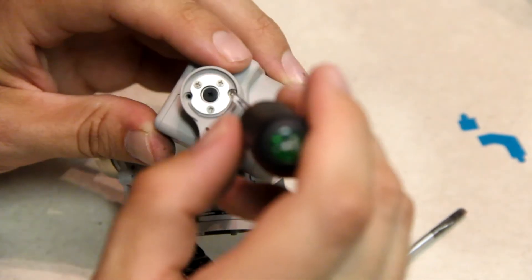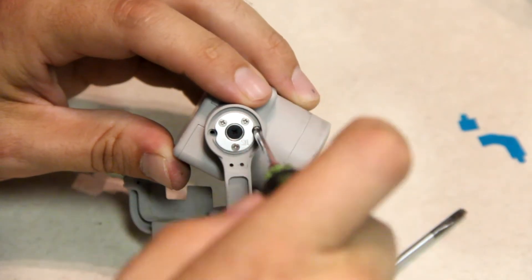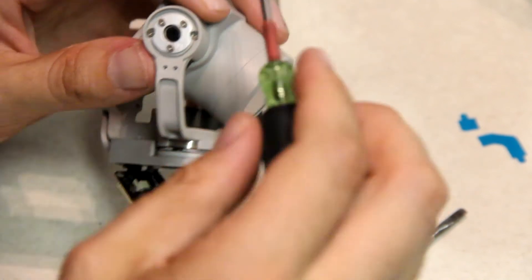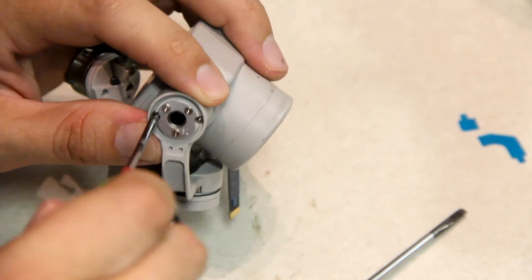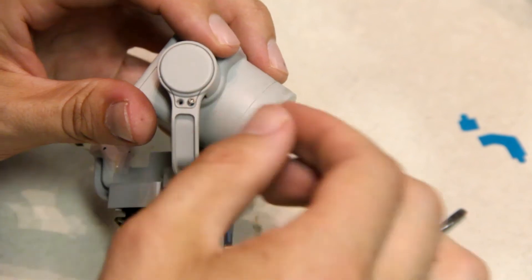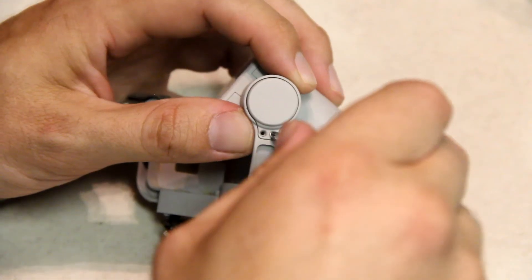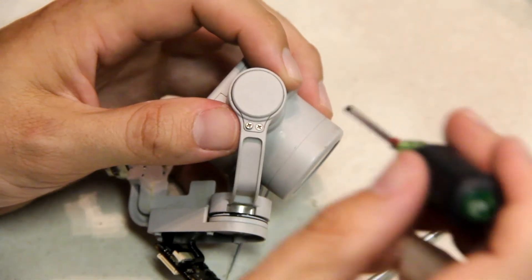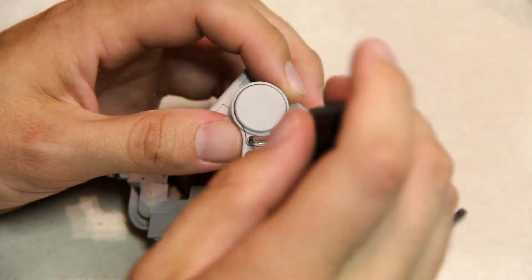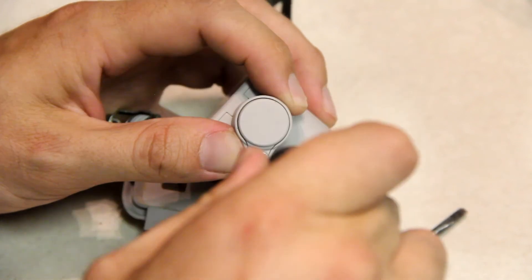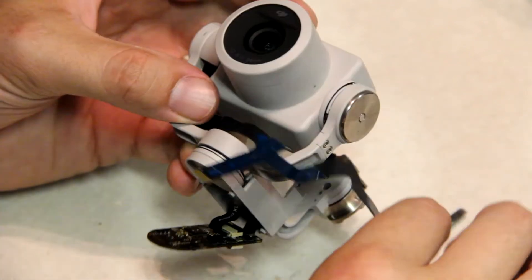This part is actually really important because you want to make sure that there's smooth, uninterrupted movement. That locks that screw. And another little cover. Two little screws.